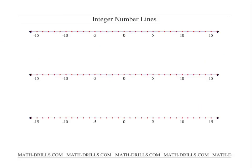If we have a number right here on the number line, that number would be negative 3. Its opposite would be positive 3. And the absolute value of negative 3 is actually 3, meaning 3 is 3 spaces from 0. Just like the absolute value of positive 3 is also 3, because the distance from 3 to 0 is 3.